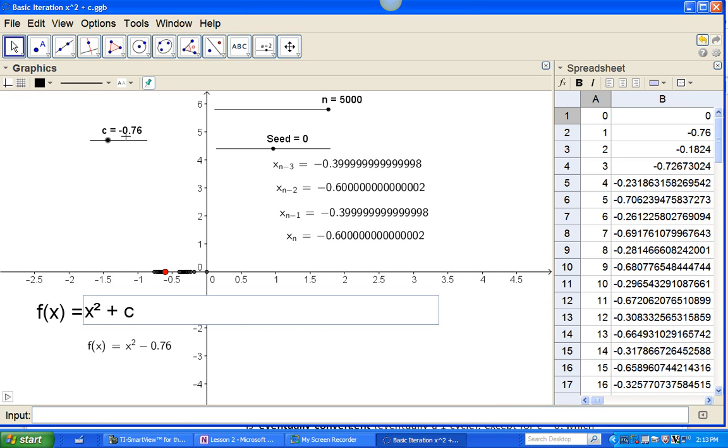So, it looks like something happened at negative 0.75, and that is going to be a point where instead of a 1 cycle, it settles down to oscillating between two numbers. Or a better way to put it, eventually oscillating between two numbers. It's asymptotically approaching two numbers. It looks like in this case, one of them is pretty darn close to negative 0.4, and the other one is pretty darn close to negative 0.6.